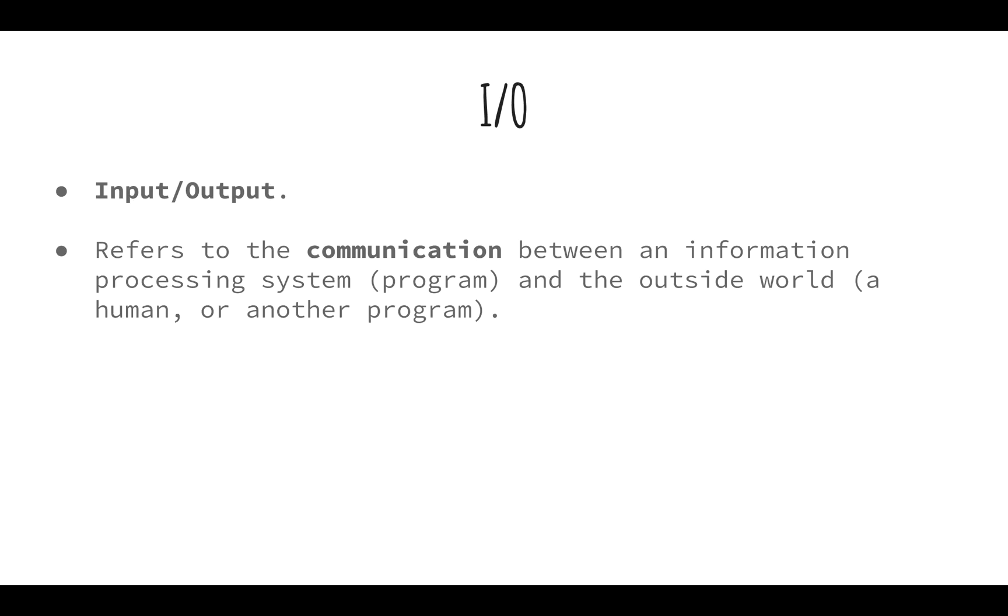So, what is I.O.? I.O. is a fancy way of saying input and output. To keep things simple, it refers to the communication link between your program and your user.